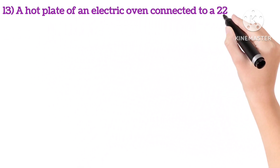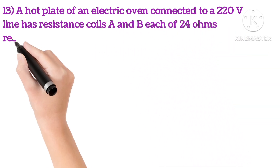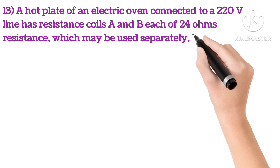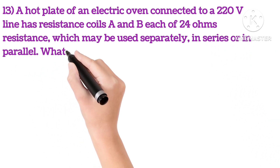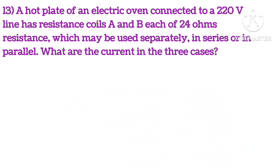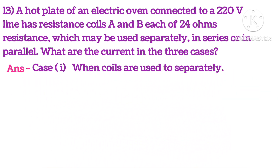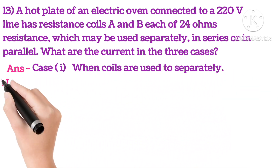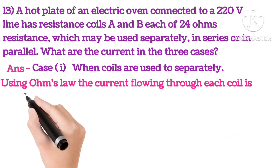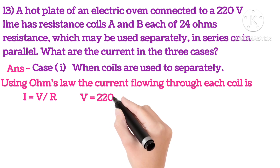Thirteenth: a hot plate of an electric oven connected to 220V line has resistance coils A and B, each of 24 ohms resistance, which may be used separately, in series or in parallel. What are the currents in the three cases? Case 1: when the coils are used separately. Using Ohm's law, the current flowing through each coil is I equals V upon R.